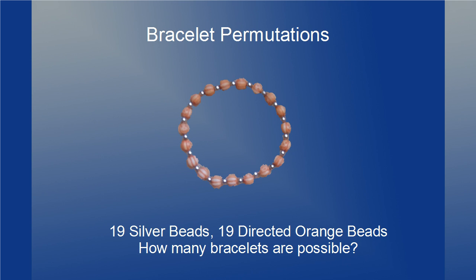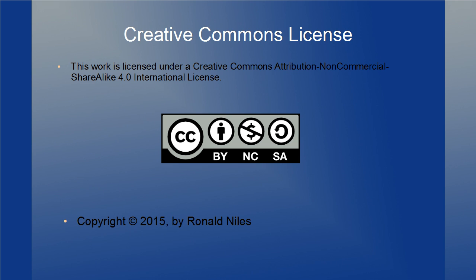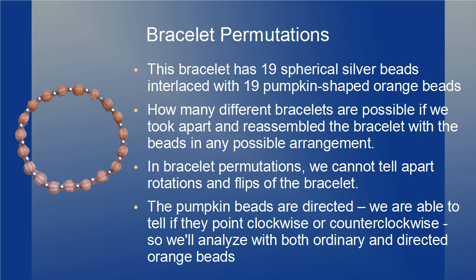I recently talked about two different bracelets where I would like to analyze the permutations that arise from them. This is the first and what I think is the easier one to analyze. This bracelet has 19 silver beads and 19 directed orange beads. This problem is inspired by a bracelet we got during October. The 19 pumpkin-shaped orange beads are interlaced with 19 spherical silver beads. We want to know how many different bracelets are possible if we took apart and reassembled the bracelet with the beads in any possible arrangement.